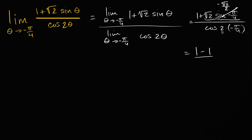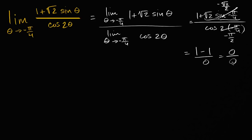The denominator is cosine of negative pi over two. Cosine of negative pi over two — that's negative 90 degrees — is just zero. So what we end up with is zero over zero. If we had something non-zero divided by zero, we'd say that's undefined and give up. But this indeterminate form does not mean the limit does not exist. It's a clue that we should use tools to get an expression that isn't indeterminate at theta equal to negative pi over four.